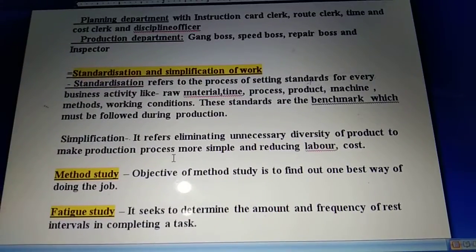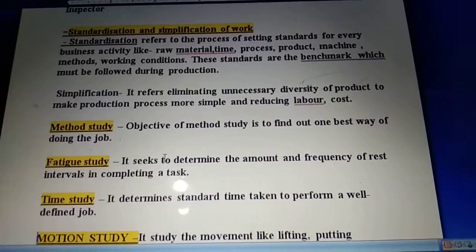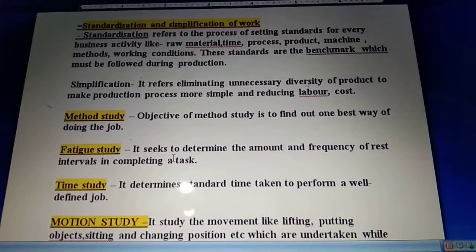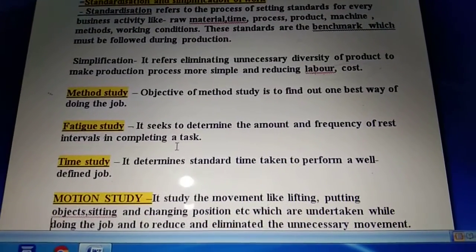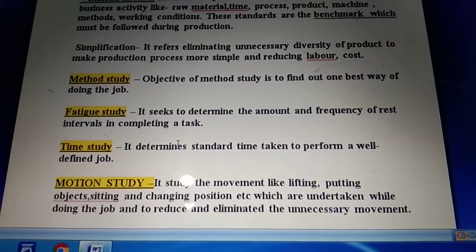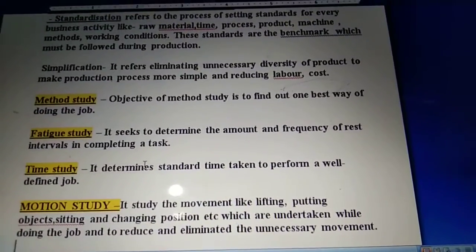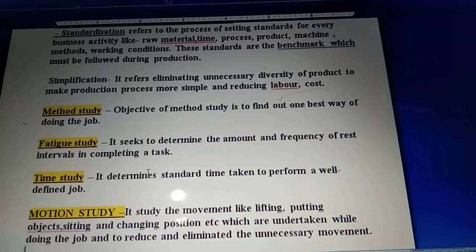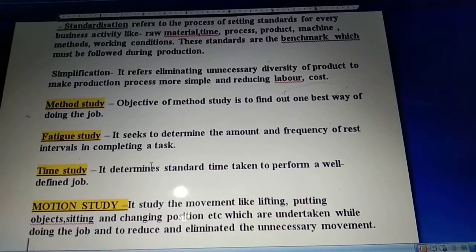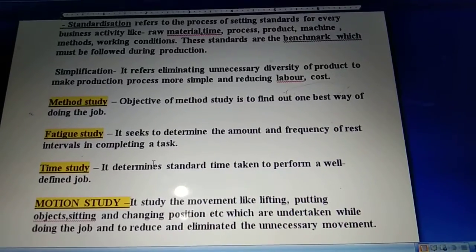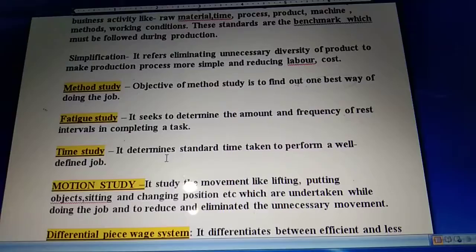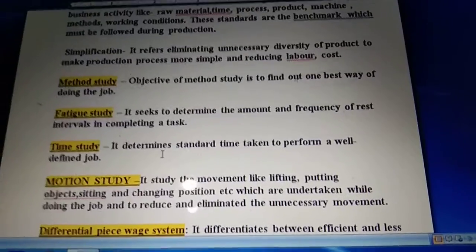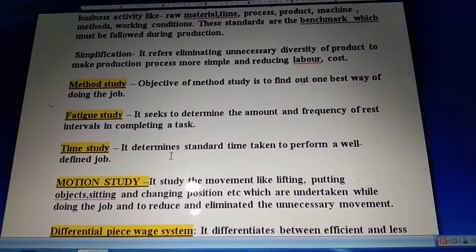The next technique of Taylor is method study. Method study basically says the main objective of a manager is to find the best method for doing the job. Next is fatigue study, which determines the amount and frequency of rest intervals in completing a task. When an employee is performing a job, it determines how much rest interval frequency is being taken to complete that work. Time study determines the standard time to perform a particular work - we measure the time for a task using time study.